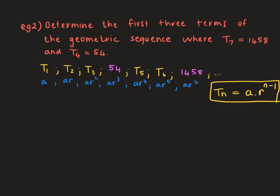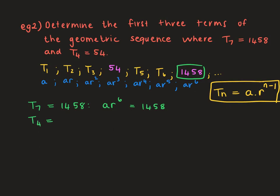The same idea applies in arithmetic sequences. Now let's get stuck in and solve for A and R so we can get our first three terms. Term 7 equals 1458, so A times R to the power of 6 equals 1458. For term 4, which equals 54: A times R cubed equals 54. The exponent is one less than the position of the term.